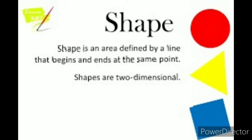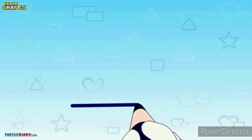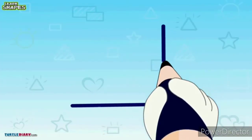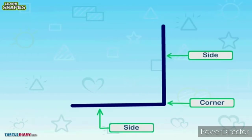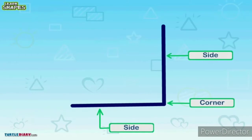So what is a shape? A shape is an area defined by a line that begins and ends at the same point. Now let's see what sides are. If we draw a line and another line joining at a point, that joining point is known as a corner. And these two lines will be called sides.